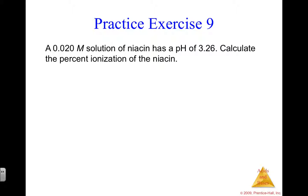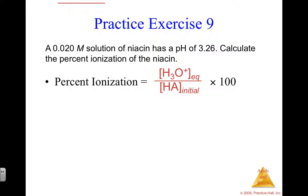We're asked to get a percent ionization. The first thing you should write down is the definition: percent ionization equals H₃O⁺ at equilibrium divided by the initial acid molarity, times 100. Remember from our pH definitions, H₃O⁺ at equilibrium equals 10 to the negative pH — and you're given a pH — so we can get this hydronium equilibrium molarity without using an ICE box.